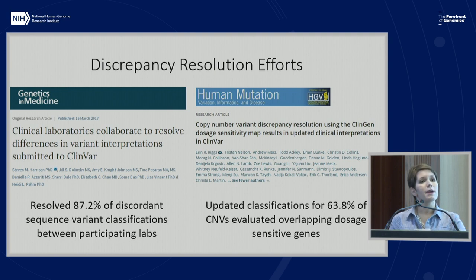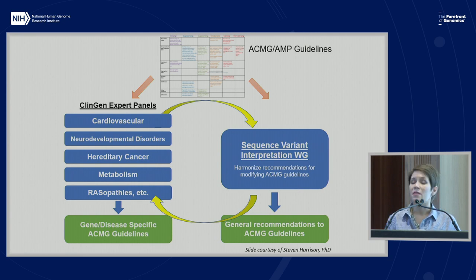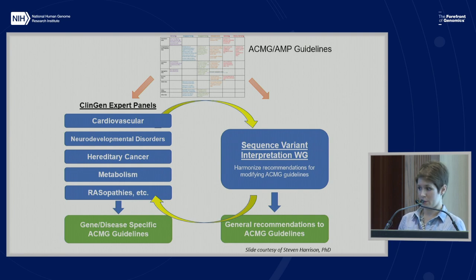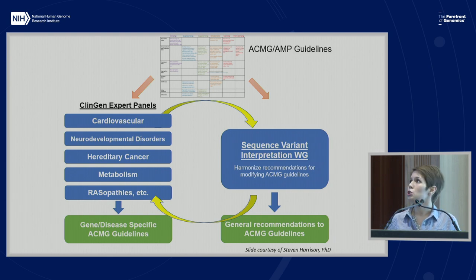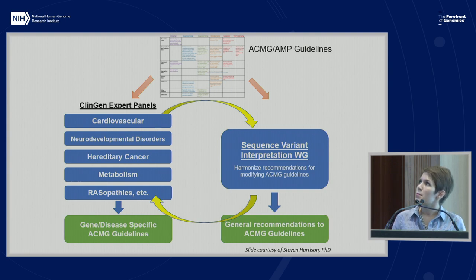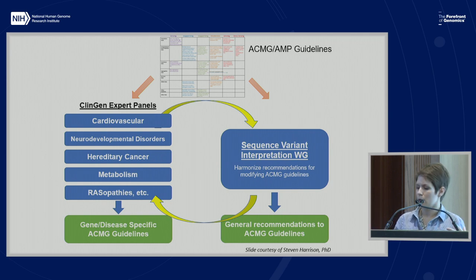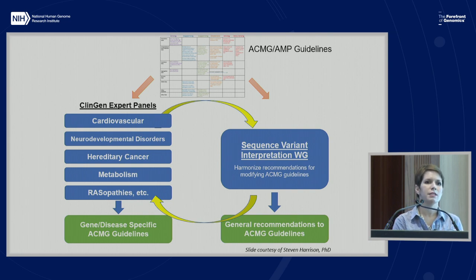The other way we address variant discrepancy issues is by trying to prevent them from happening in the first place. We have a group called the Sequence Variant Interpretation Working Group that's working to further specify the ACMG-AMP guidelines for sequence variant interpretation. Concurrently, we have our domain-specific groups — for example, cardiovascular, neurodevelopmental disorders, hereditary cancers, and others — working within those spaces to identify specific modifications to these rules in particular disease settings. When groups do that, they can apply for expert panel status in ClinVar, which is how we get those three-star expert panel records mentioned earlier.